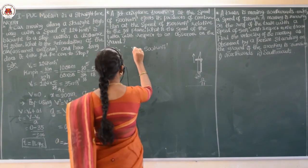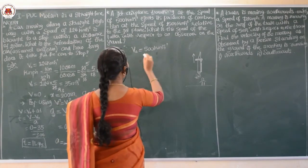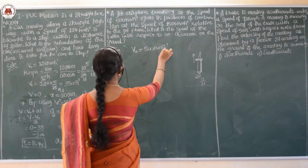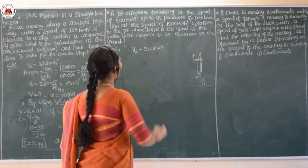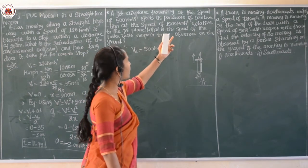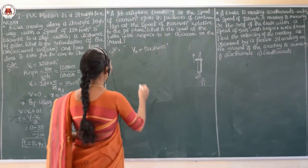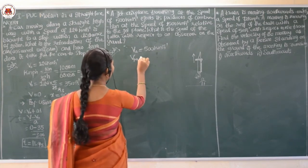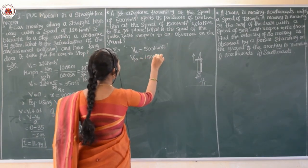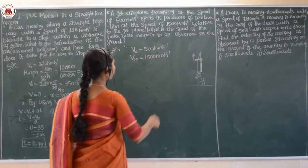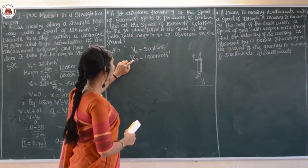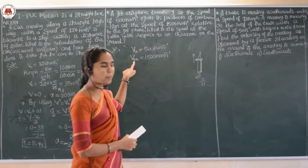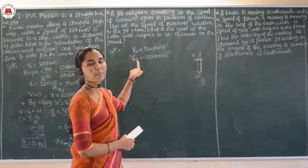The velocity of the airplane is given as 500 km/h. The relative velocity of the products with respect to the airplane is given as 1500 kilometer per hour. We write this as V_PA = velocity of product with respect to airplane = 1500 km/h. We need to find the speed of the products with respect to an observer on the ground.